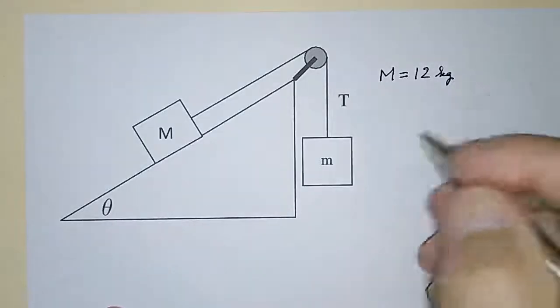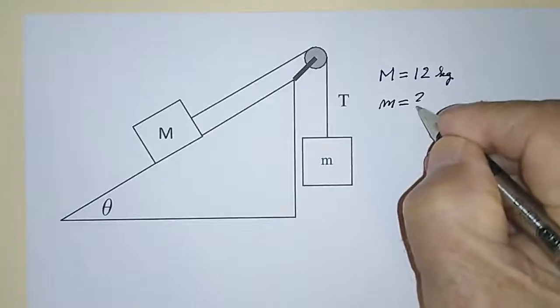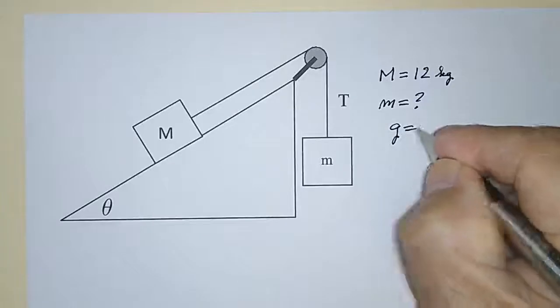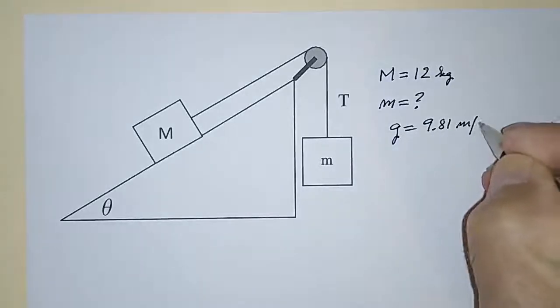What we want to know is, what is the mass, little m, equal to? That's what we're after. And we know that the acceleration due to gravity is 9.81 meters per second squared.